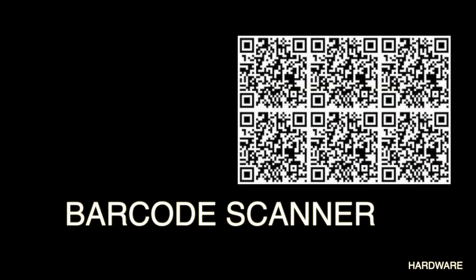A barcode scanner is an optical scanner that can read printed barcodes, decode the data contained in the barcode and send the data to a computer. Like a flatbed scanner, it consists of a light source, a lens and a light sensor for translating optical impulses into electrical signals.